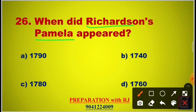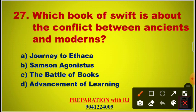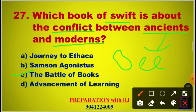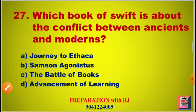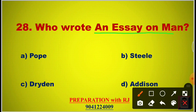The answer is B, 1740 — 1740 is the right answer. Question 27: Which book by Swift is about the conflict between ancients and moderns? Options are Journey to Ithaca, Samson Agonistes, The Battle of the Books, Advancement of Learning. The answer is C, The Battle of the Books. Ancients are represented by bees, moderns represented by spider. This book was published in 1704.